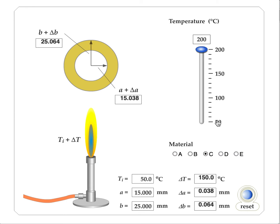If I look at material D, I see that the inner radius changes by 0.065, the outer radius changes by 0.109.